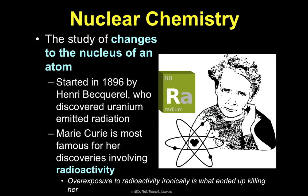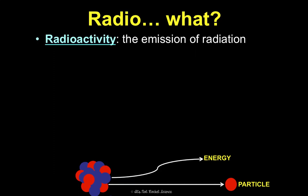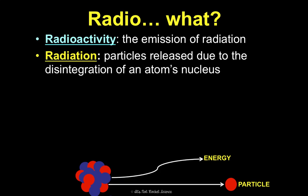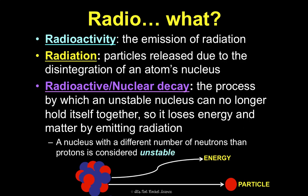So, radiation and radioactivity — what are these words? Radioactivity is the emission of radiation. Radiation is particles released due to the disintegration of an atom's nucleus. When an atom's nucleus disintegrates, it gives off particles called radiation, and when that happens there is radioactivity. Radioactive decay, or nuclear decay, is the process by which an unstable nucleus can no longer hold itself together, so it starts losing energy and matter by giving off radiation. These words are often used interchangeably. A nucleus with a different number of neutrons than protons is considered unstable, and some are more unstable than others.